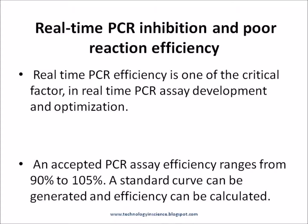Parameters to optimize include buffer composition and other reaction conditions. An accepted PCR assay efficiency ranges from 90% to 105%. A standard curve can be generated and efficiency can be calculated from it.